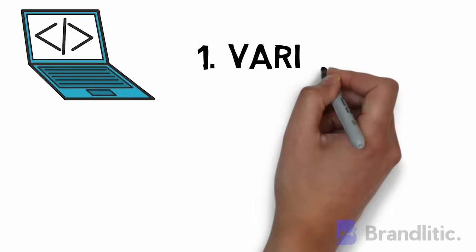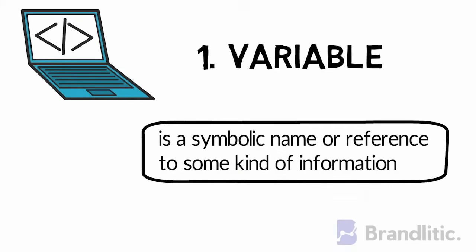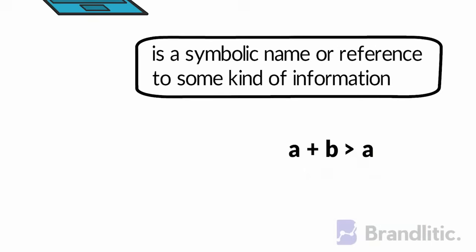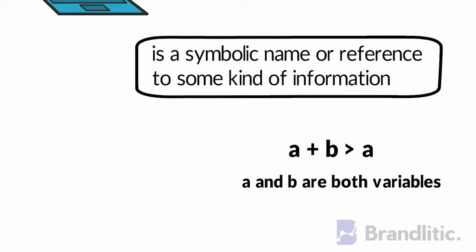1. Variables. By definition, a variable is a symbolic name or reference to some kind of information. This is similar to how a term is used in maths. For example, if we are using only positive integers, then a plus b is always greater than a. In this scenario, a and b are both variables.